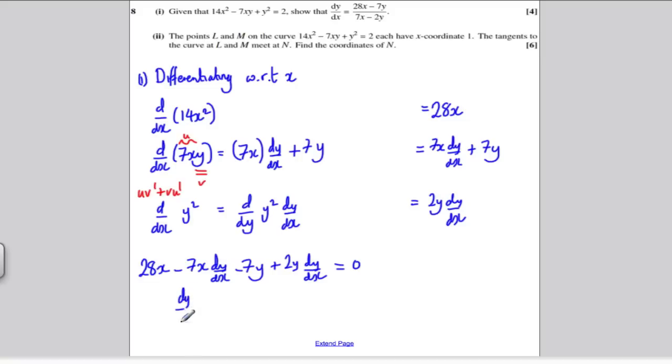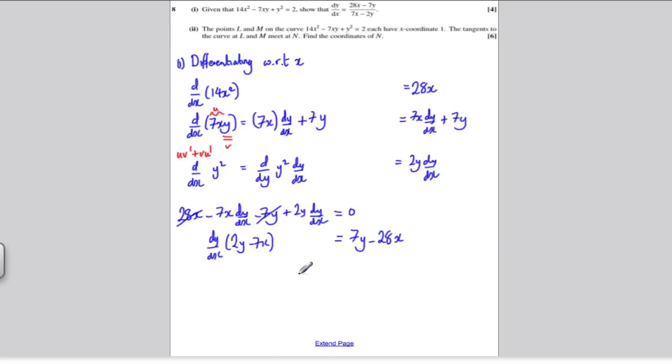How many dy/dx's do I have? Well, I have 2y minus 7x of them. I'm factorizing the dy/dx here. If I add 7y to both sides, it would remove this. If I subtract 28x from both sides, it would remove that. And I would get 7y minus 28x.